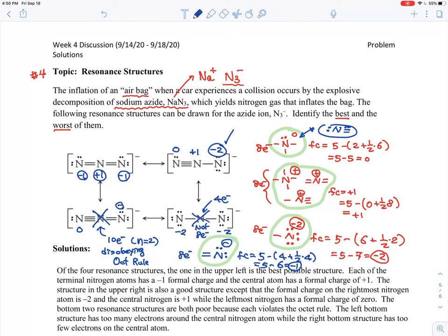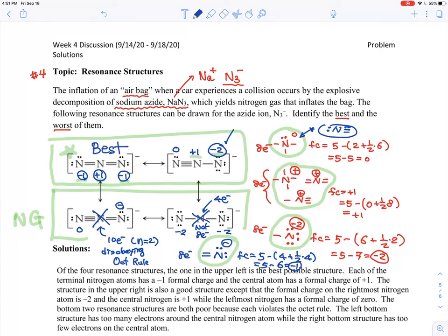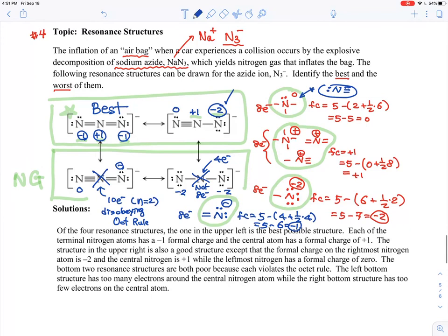Okay. And so among this, you have the best and the worst of them. So I guess these two are not good. No good. This is better. Among this, which is better? Minus two and plus one or minus one, minus one and plus one. So this is a winner. Okay. So this is what is called the best structure.